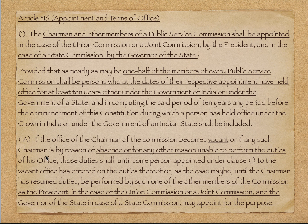Clause 1A बताता है कि अगर chairman का office vacant हो जाता है — maybe because of his absence, बीमारी, या resignation — तो जब तक नया chairman choose नहीं होता, president किसी भी दूसरे member को बोल सकता है कि वो chairman act करे। UPSC और joint commission के लिए president ये काम करेगा, और state service commission के लिए governor ये काम करेगा।